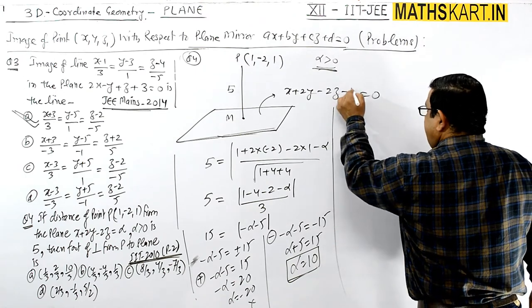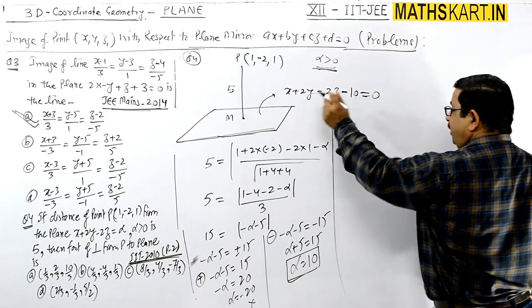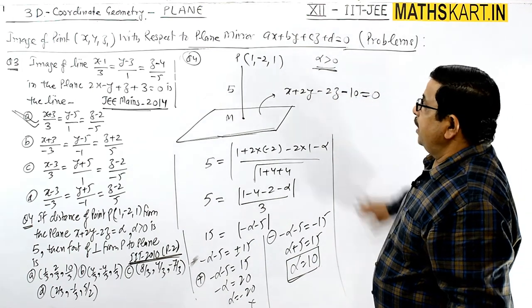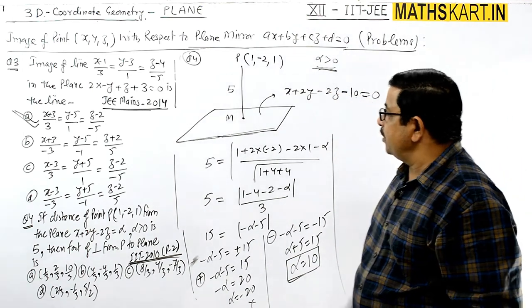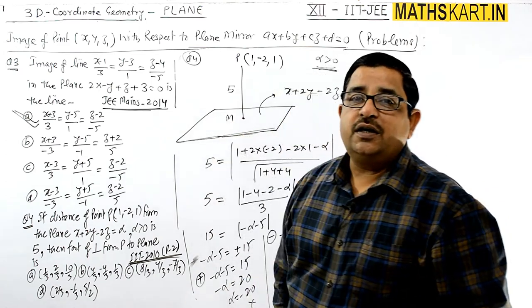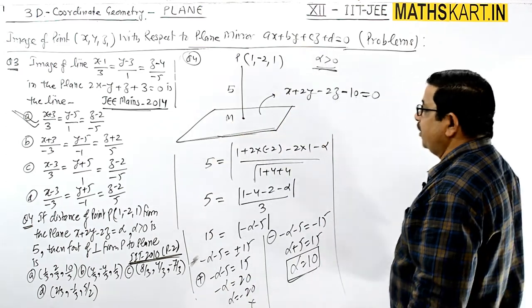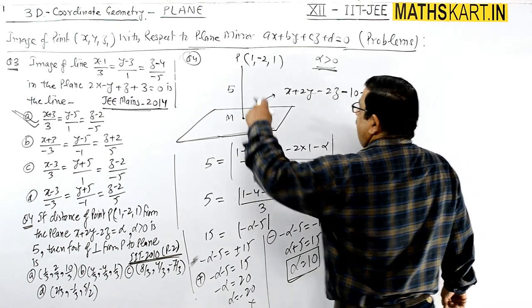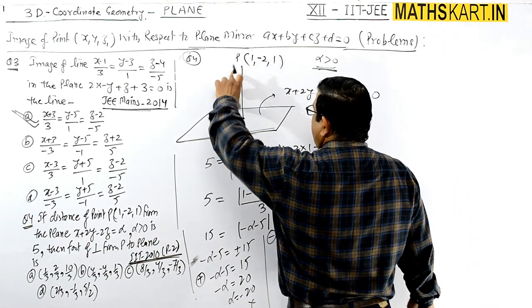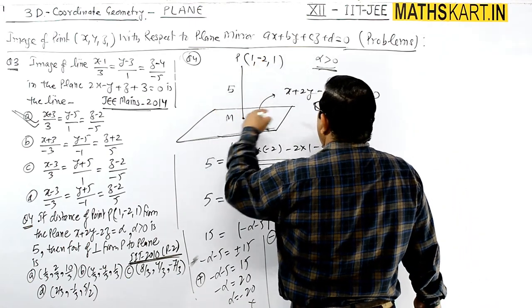Now this is the plane defined perfectly. We require the coordinates of point M. M's coordinates are required. Here we'll create this line. How will the line be created?